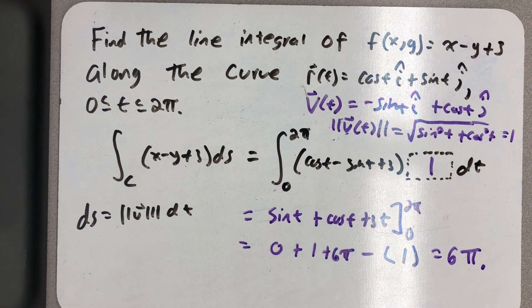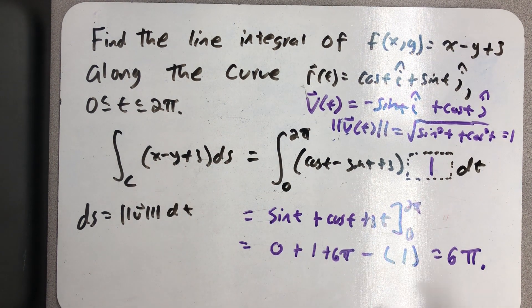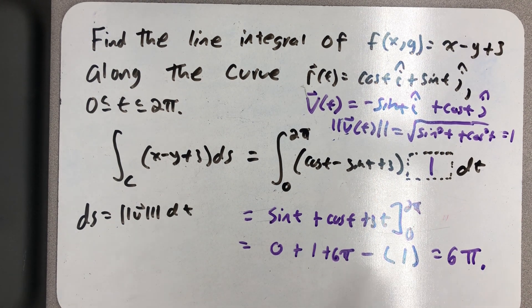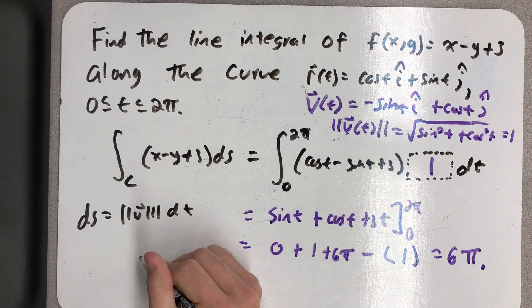Not too hard of a problem, but I think it's more interesting to think about what we actually evaluated here, what this 6π actually represents. I have a plane curve that is the unit circle, and so that's pretty boring.